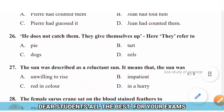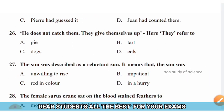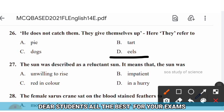Question 26: He does not catch them — they gave themselves up. Here 'they' refers to — options: Pierre, tart, dogs, eels. The right answer is option D — 'they' refers to eels.